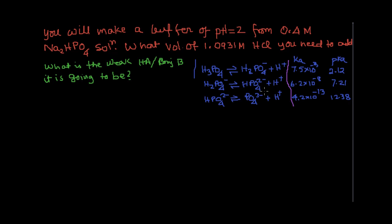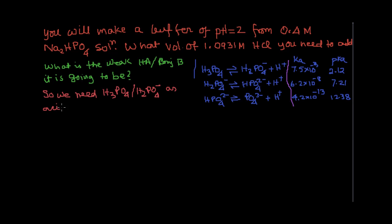So these are the three forms of equilibrium that can exist. Now, in order for this buffer to have a pH of 2, the equilibrium we need to work with is the first one, where the pKa value is 2.12 — the closest to the desired value. So we need H₃PO₄ and H₂PO₄⁻ as our acid and conjugate base system.